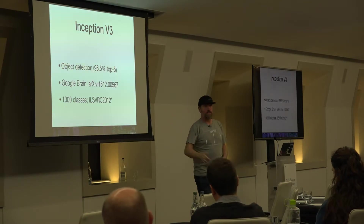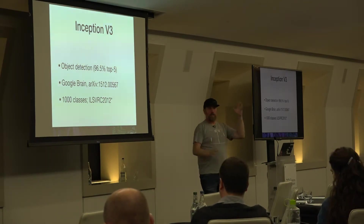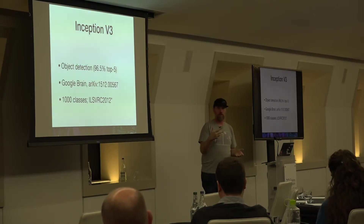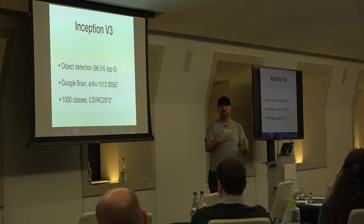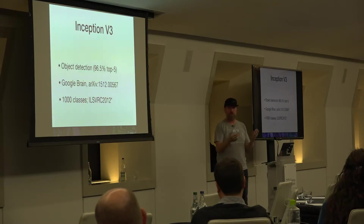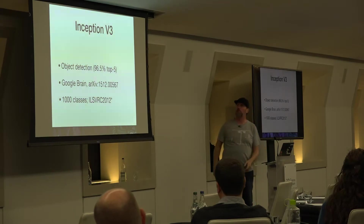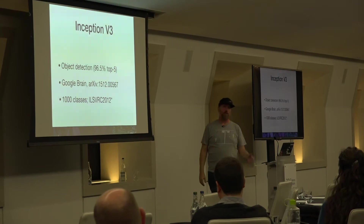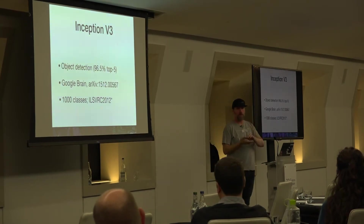There are 1,000 classes. Someone selected those 1,000 classes, so you end up with three different kinds of elephants: African, Indian, and tusker. But there's no raspberry in the dataset. So instead of raspberry, the model uses strawberry, which looks similar. Depending on the source, top-5 accuracy is 96.5%. This is Inception V3.